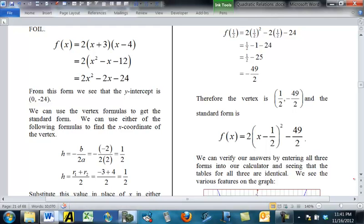B is negative 2, A is 2. Plug those in, you get 1 half for H. Or we could just start where we were at the beginning. The two roots are negative 3 and 4. Average them to get 1 half for H. Either way you go, you get 1 half is H.